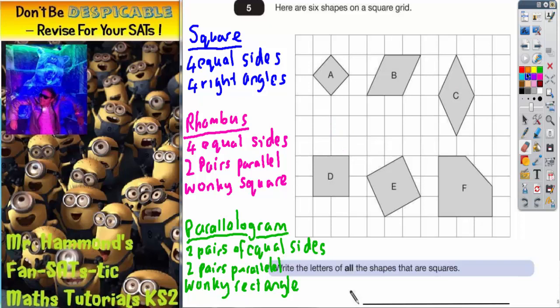Question 5 is all about 6 shapes drawn on a square grid. We've got to write the letters of all the shapes that are squares. So we're only interested in writing down the squares on this answer line.